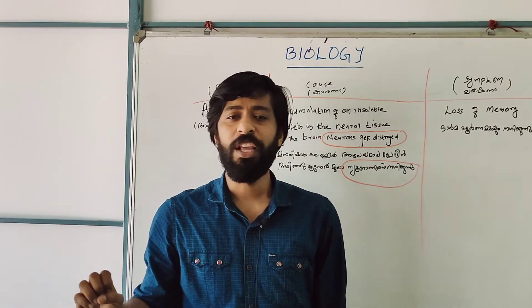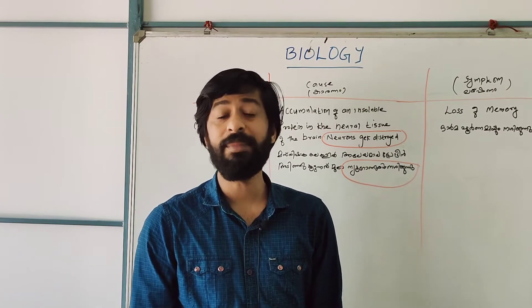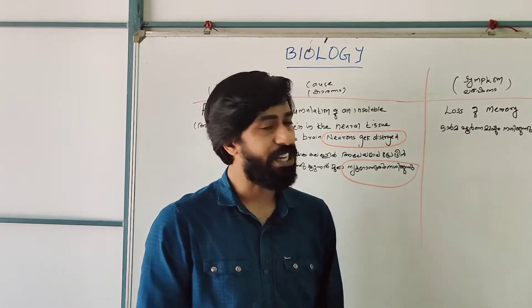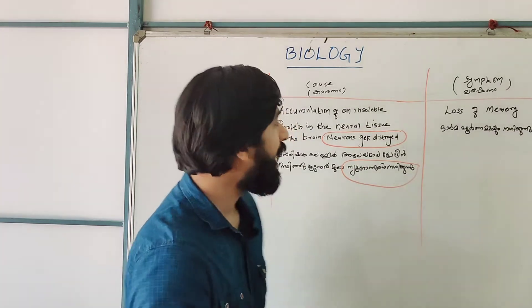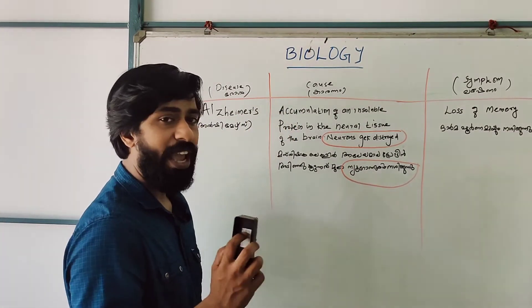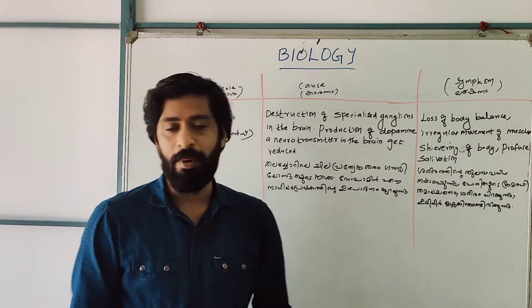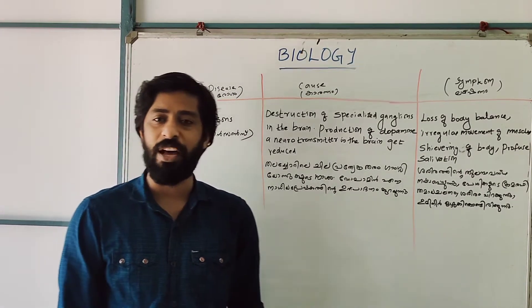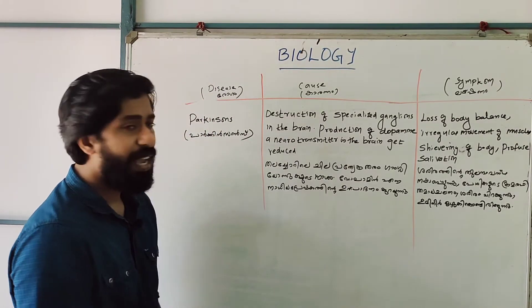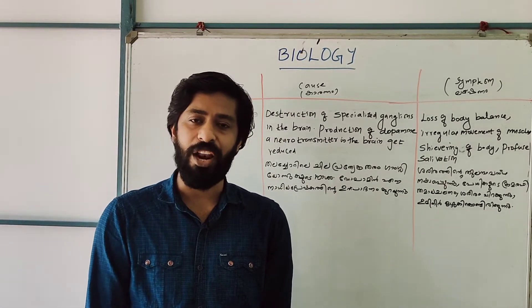Loss of memory is a symptom of Alzheimer's disease. Symptom means a symptom. We will learn something. We are going to mention Parkinson's symptoms next. We have mentioned Alzheimer's disease, where neurons are degrading.